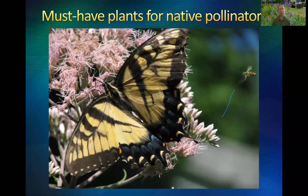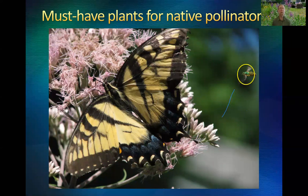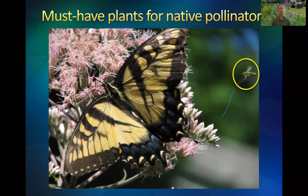Joe Pye weed — very nice to have if you can stand a plant that's taller than you are in your yard and that tends to fall over when soaked with rain. It's worth it because those flower clusters bring in not only butterflies and bumblebees, but also the little sweat bees and other insects. In fact, in my own yard, my second rusty patch bumblebee observation was on Joe Pye weed — so I'm sold on it. If it can bring endangered species to my yard, I'm going to have it.